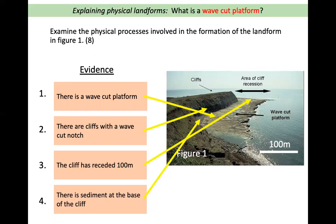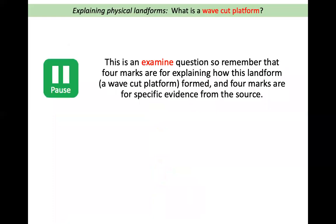Those are four pieces of evidence that you can use, and these should be combined with the explanation of how the platform forms. Pause the video and have a go at writing your own eight-mark answer. In summary, this is an examine question: four marks are for explaining how the landform is formed, and four marks are for including specific evidence from the source. Look through your answer and give yourself a tick in green pen each time you have included a piece of evidence, to check that you have included four pieces. Now we know how to explain how a wave-cut platform is formed.